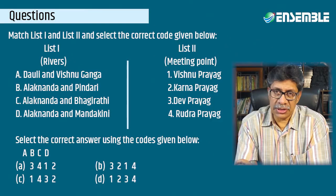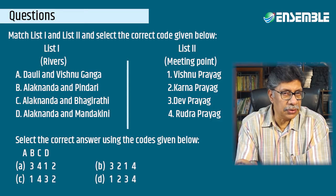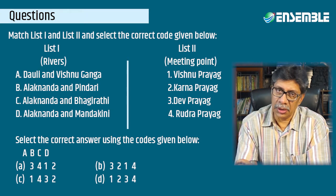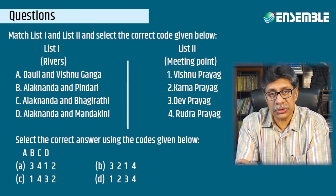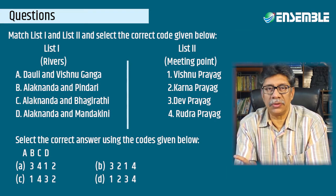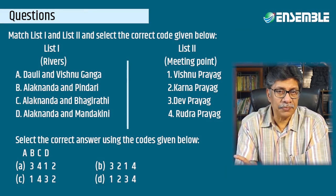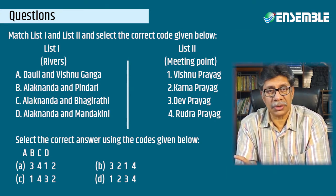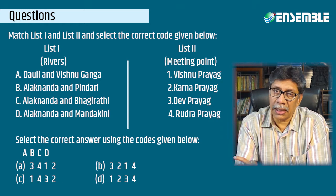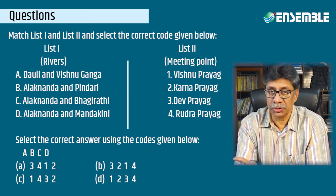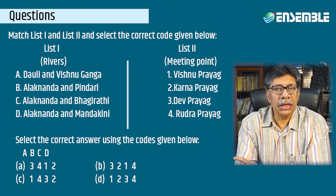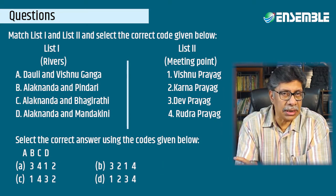The third question was a match-list type: match list one and list two and select the correct code. The pairs were: Dhauli Ganga and Vishnu Ganga matching with Vishnu Prayag; Alaknanda and Pindari with Karna Prayag; Alaknanda and Bhagirathi with Dev Prayag; and Alaknanda and Mandakini with Rudra Prayag. Students had to choose the correct matching answer.